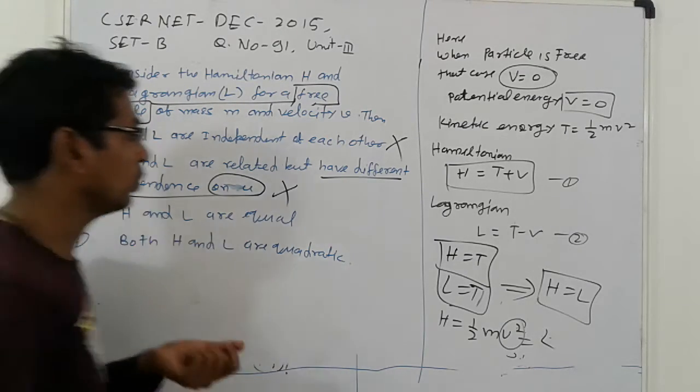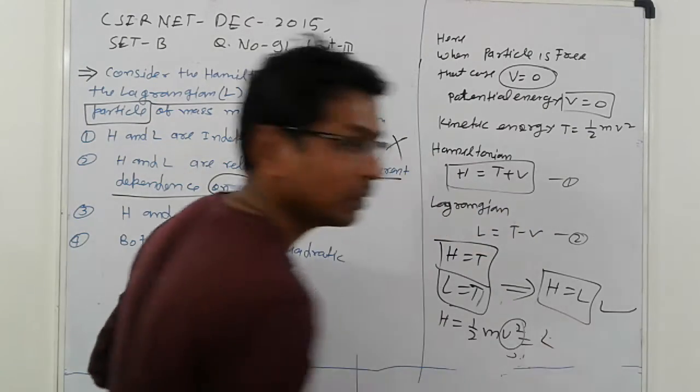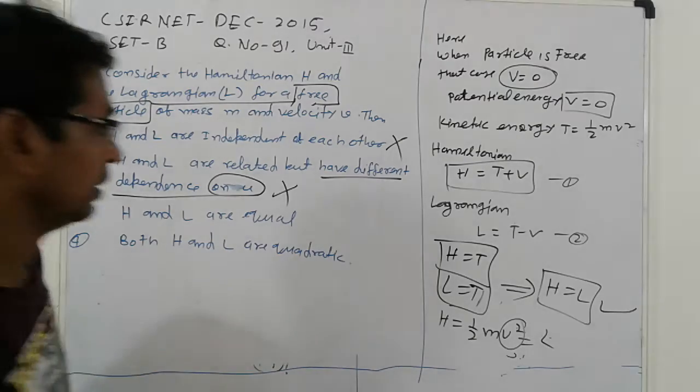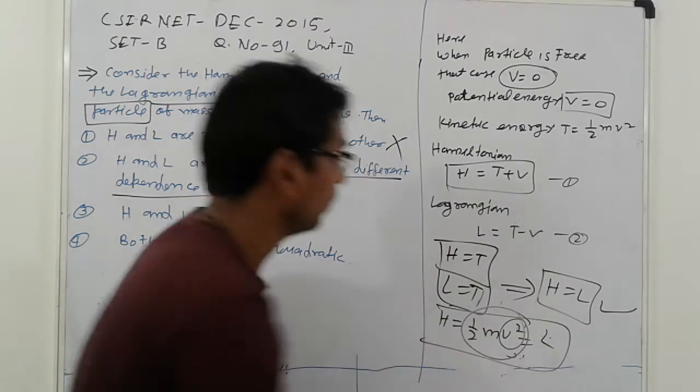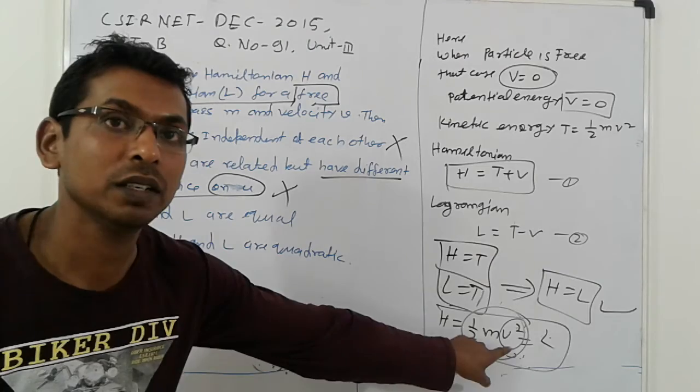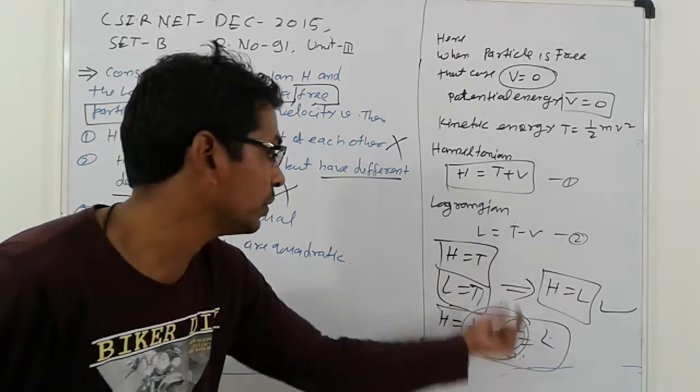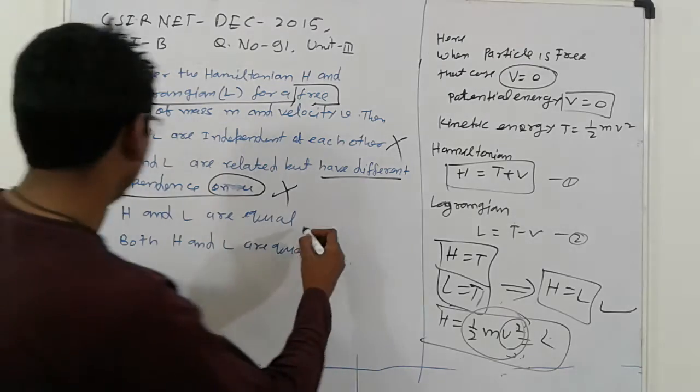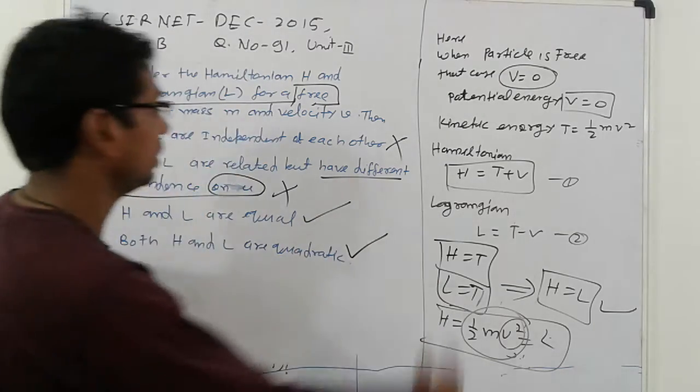Next, H and L are equal. H and L are equal. And both H and L are quadratic. So that is quadratic—V square. V square equal to something, which means, which is quadratic. So that is the answer. So here option 3 and option 4 are correct.